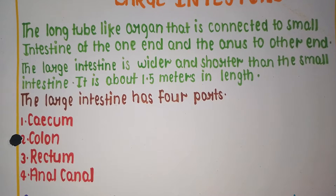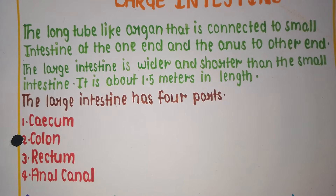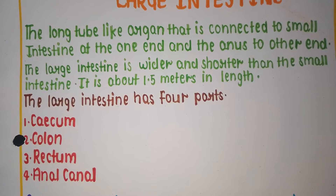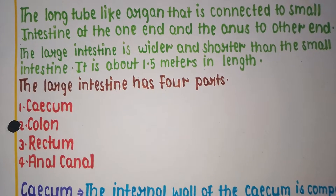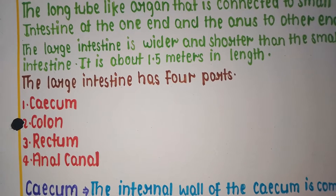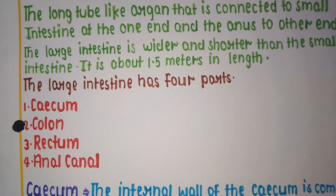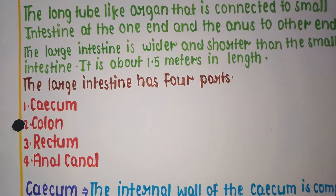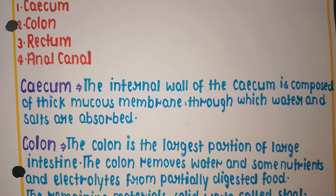The large intestine is about 1.5 meters in length. The large intestine has four parts: number one, cecum; number two, colon; number three, rectum; and number four, anal canal.